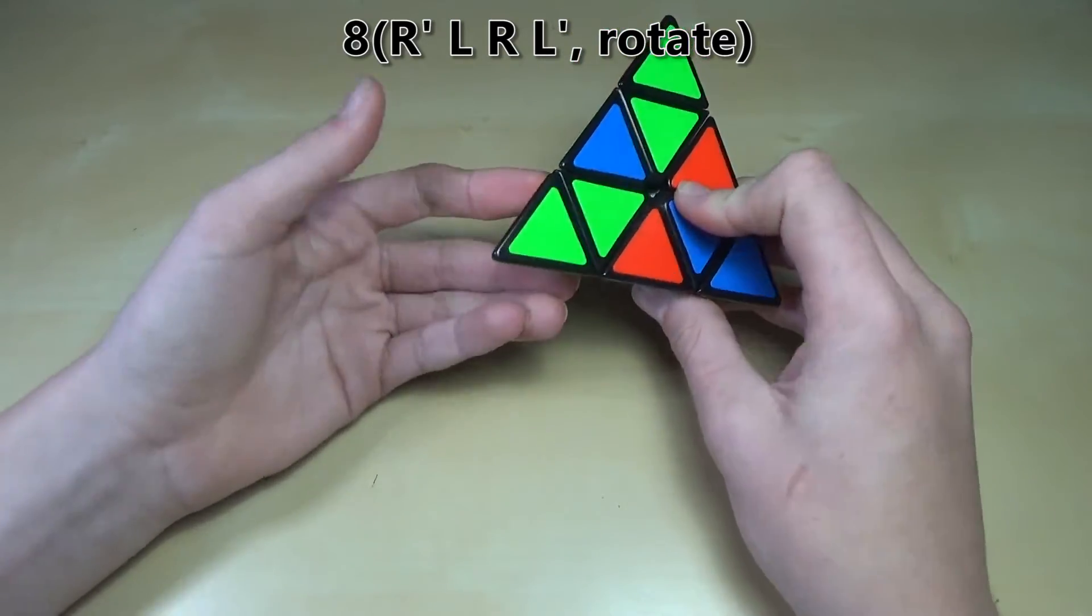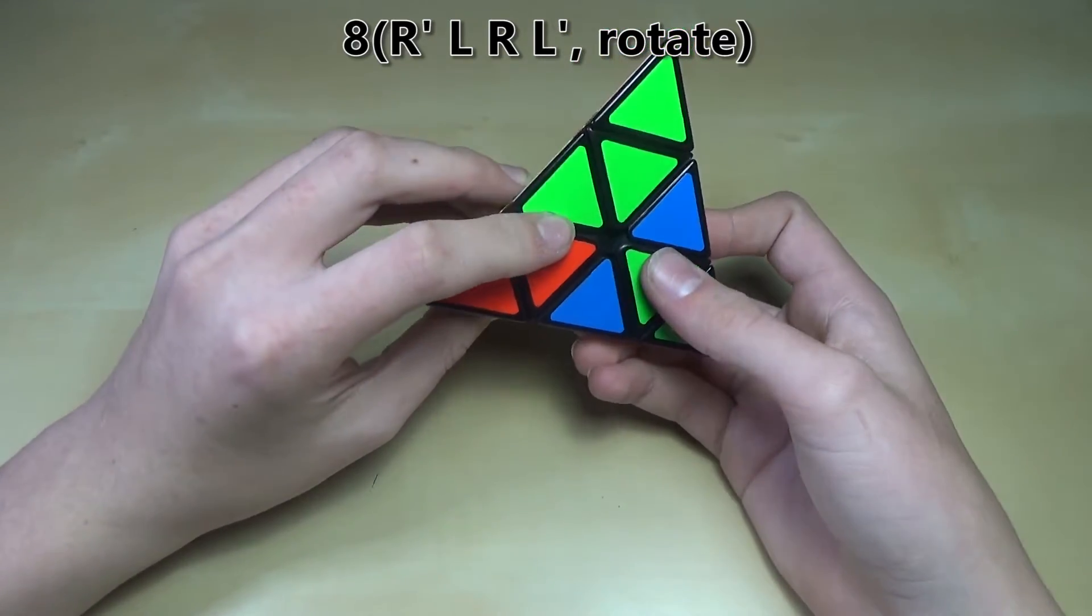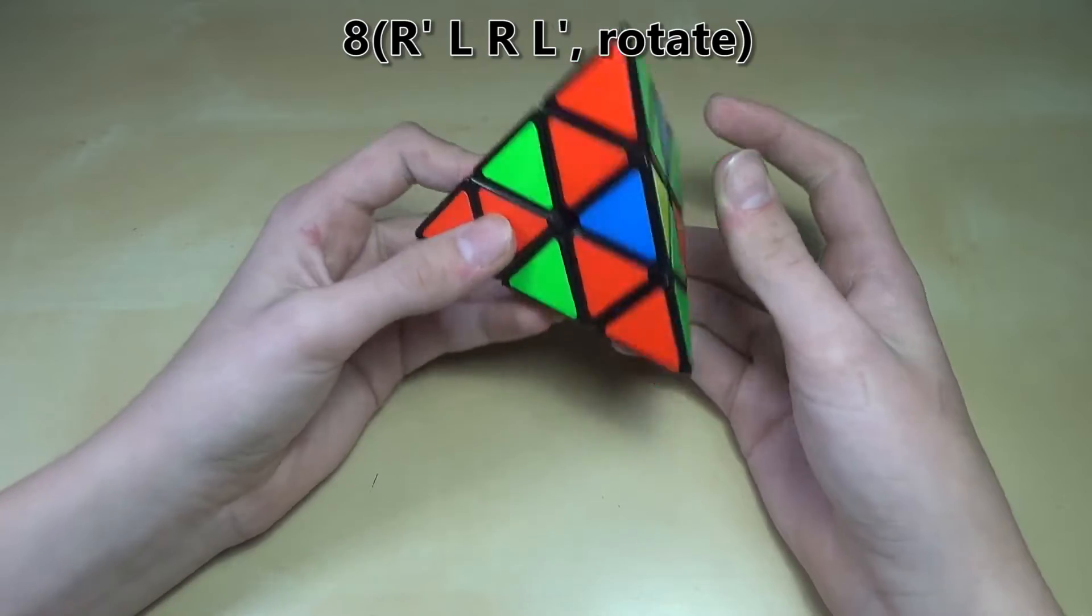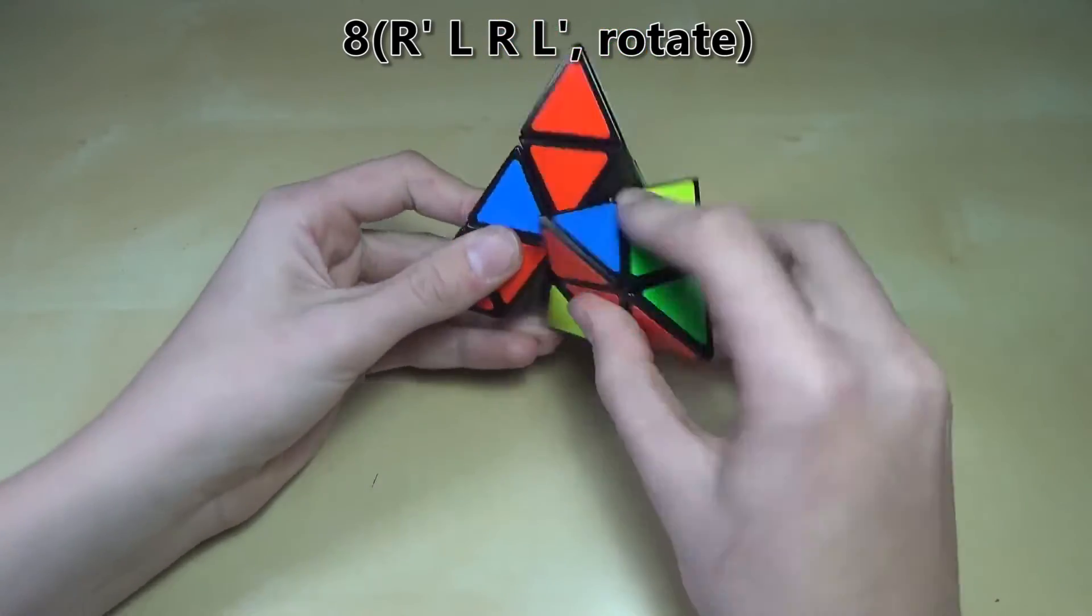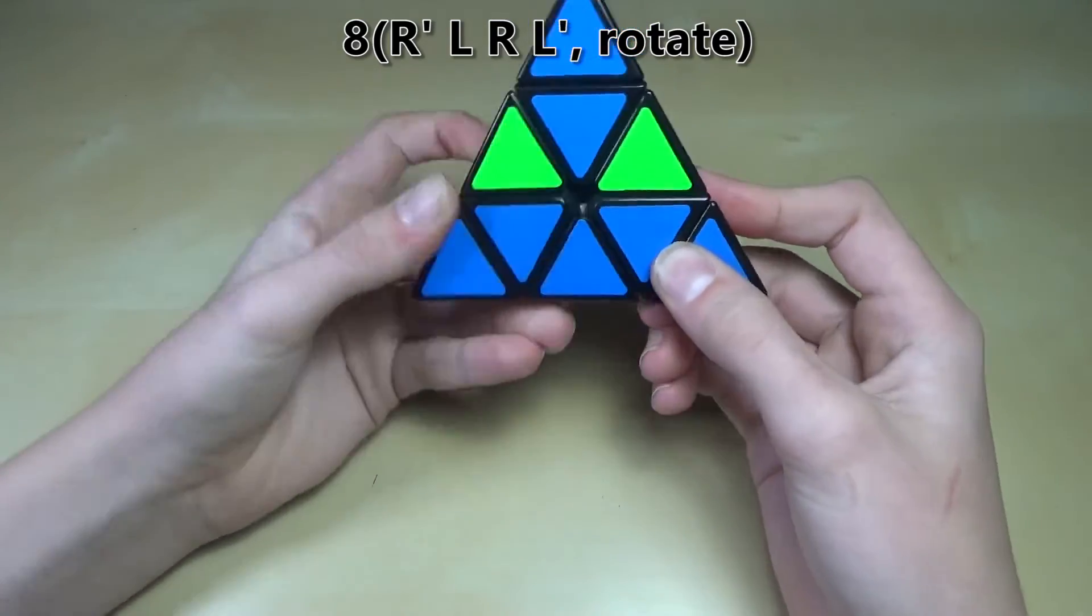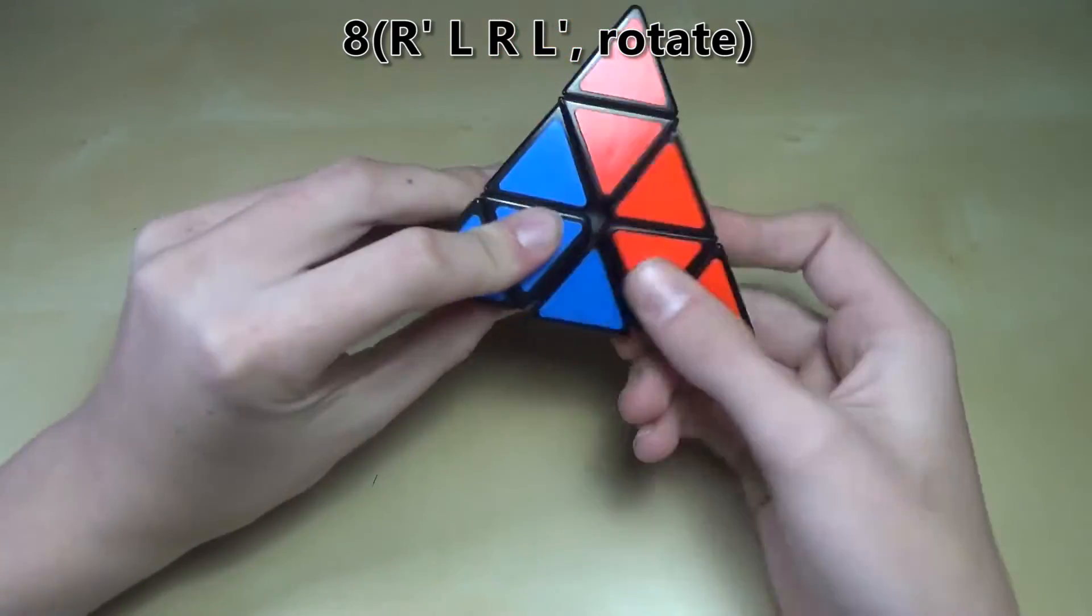So you do R', L, R, L', and then do a cube rotation the other way. And then just do that a couple times until you get back to the start.